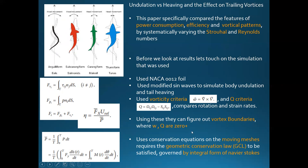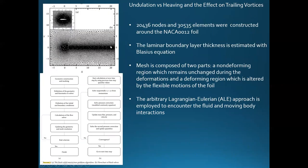The simulation uses a moving mesh, requiring the geometric conservation law, and is governed by the Navier-Stokes equations. The mesh shows careful attention to the trailing vortices behind the fish, with a moving mesh region where flow hits the moving body. They used the Blasius equation to estimate the laminar boundary layer thickness and a Lagrangian-Eulerian approach in the moving mesh region.